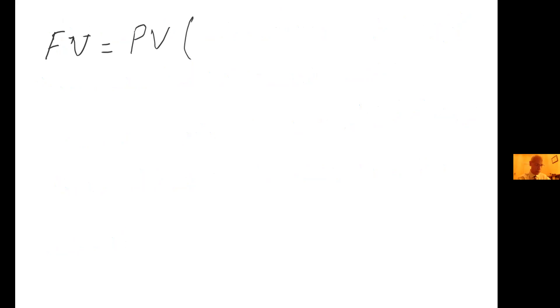Times 1 plus r over n to the power of nt. So f is future value, pv is present value, r is rate, n is how often compounded, and t is time in years.